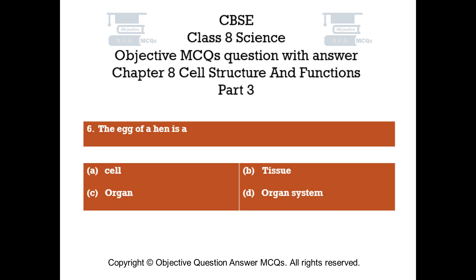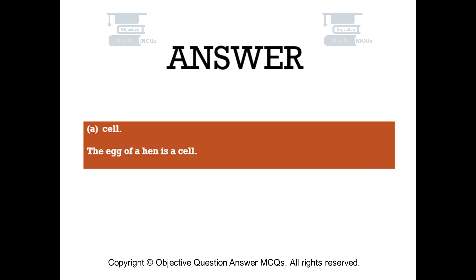Question number 6: The egg of a hen is — Option A: Cell, Option B: Tissue, Option C: Organ, Option D: Organ system. The right answer is Option A: Cell. The egg of a hen is a cell.